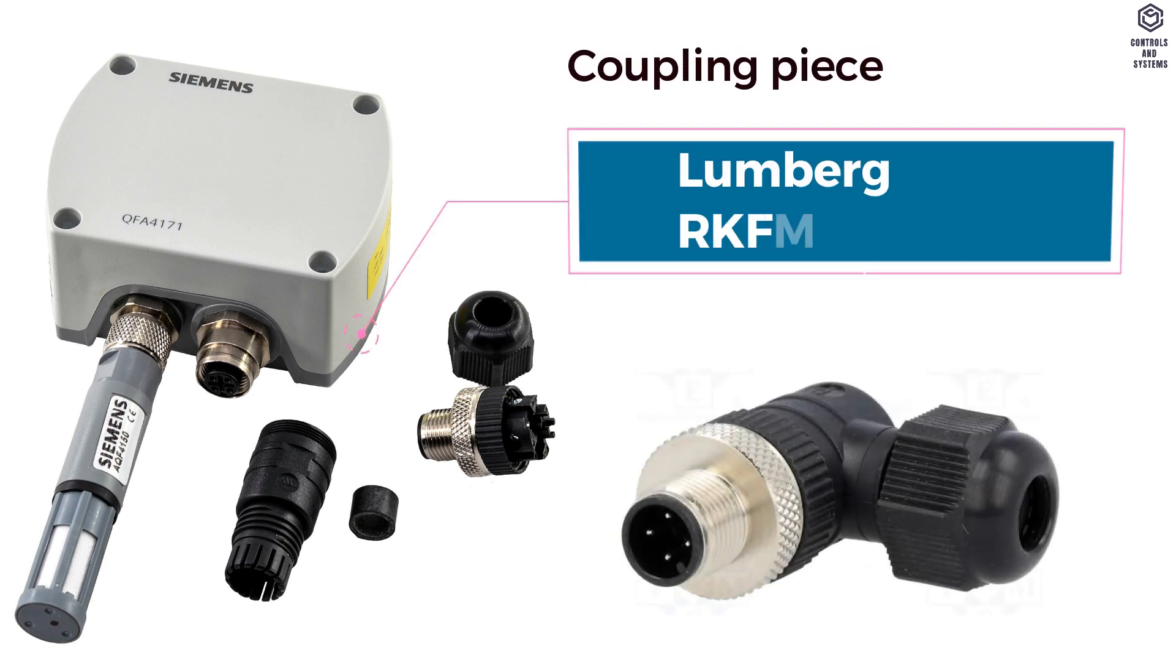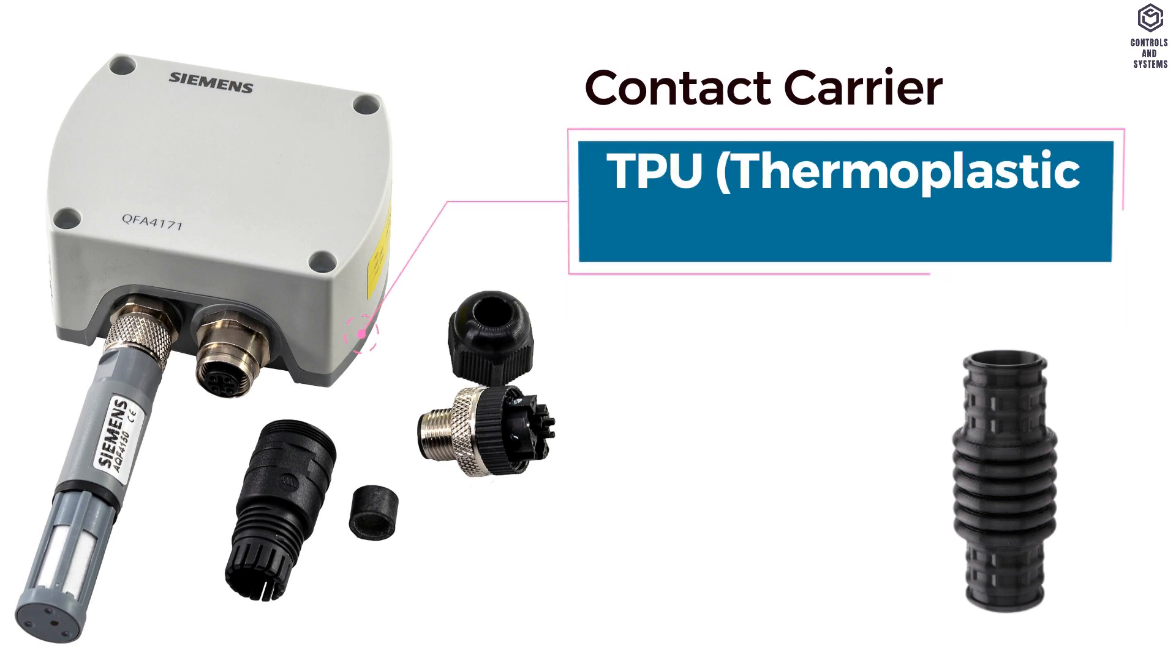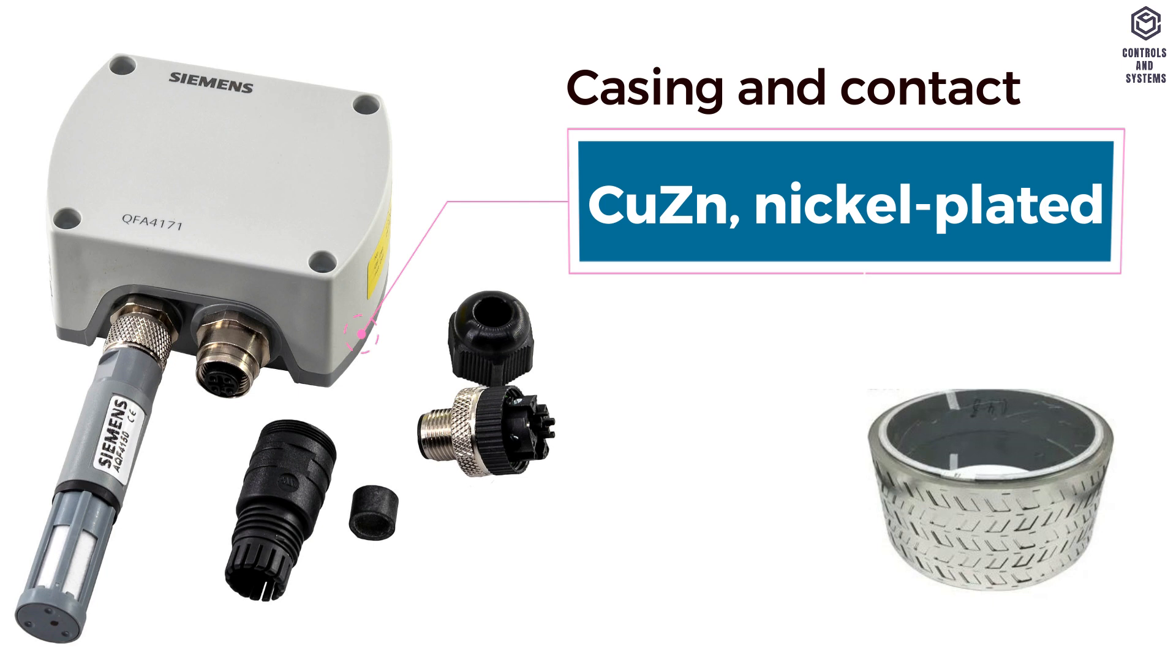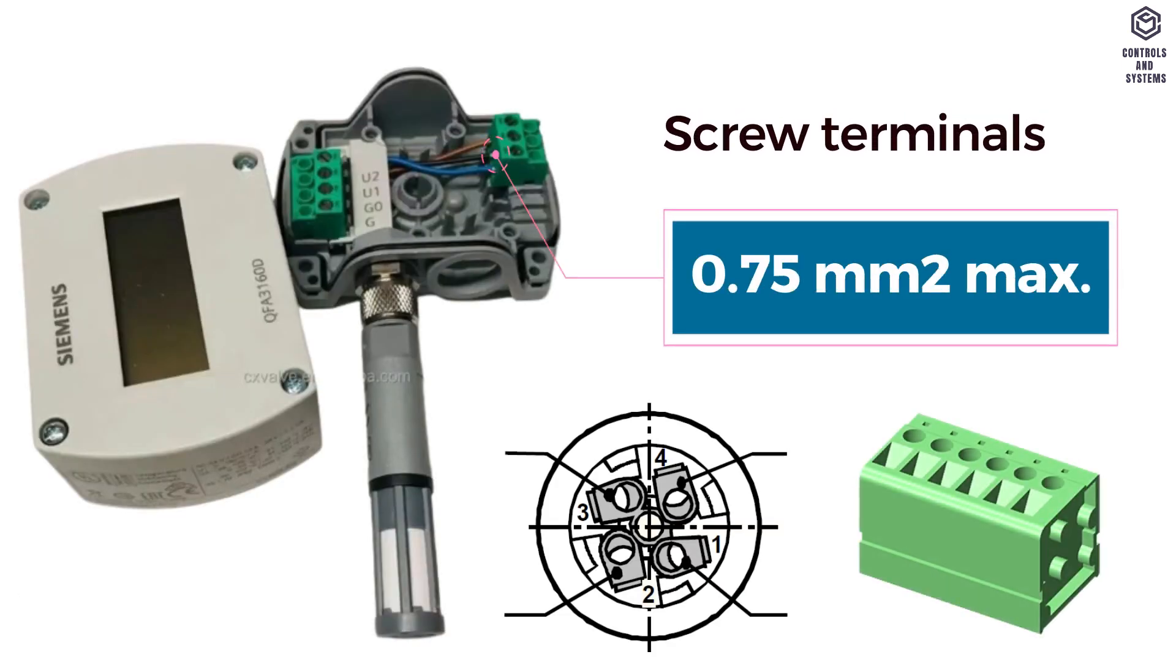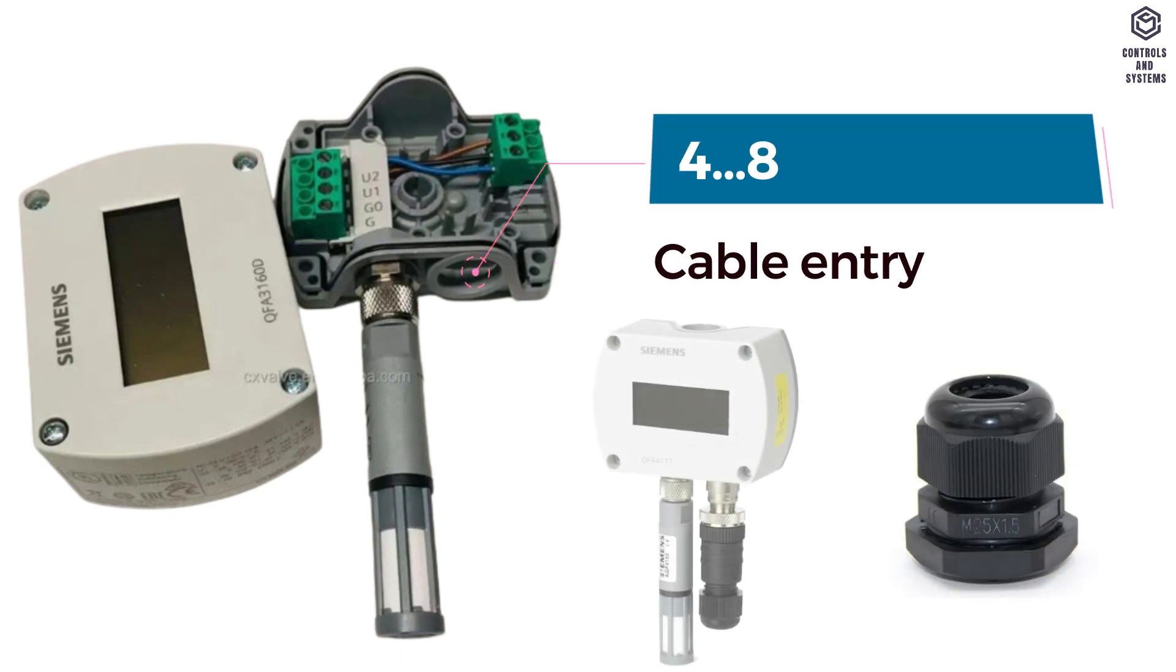Coupling piece is Lumberg KFM40.5M. Contact carrier is thermoplastic polyurethane. Casing and contact is copper or zinc. Screw terminals is 0.75 mm² maximum. Cable entry is 4-8 mm diameter.